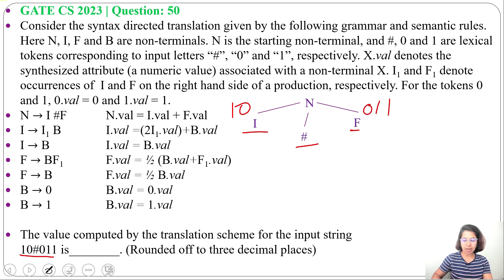So, from I, I will derive I1 B. Then, from this B, I will derive 0. So, from I1, we need to derive 1. So, from I1, I will derive B. Then, from B, I will derive 1. Next, from this B, I will derive 0. Now, we got 1, 0, #.